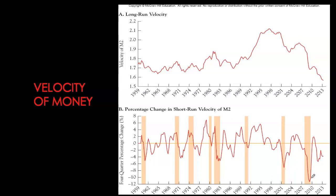The quarterly data creates serious problems for the quantity theory of money. If velocity is not constant and in fact fluctuates with interest rates, we cannot use control of monetary growth rates to control inflation. So let's move on to our next theory, which will help explain why velocity fluctuates the way it does and what can serve as an alternative policy instrument for monetary policy makers.